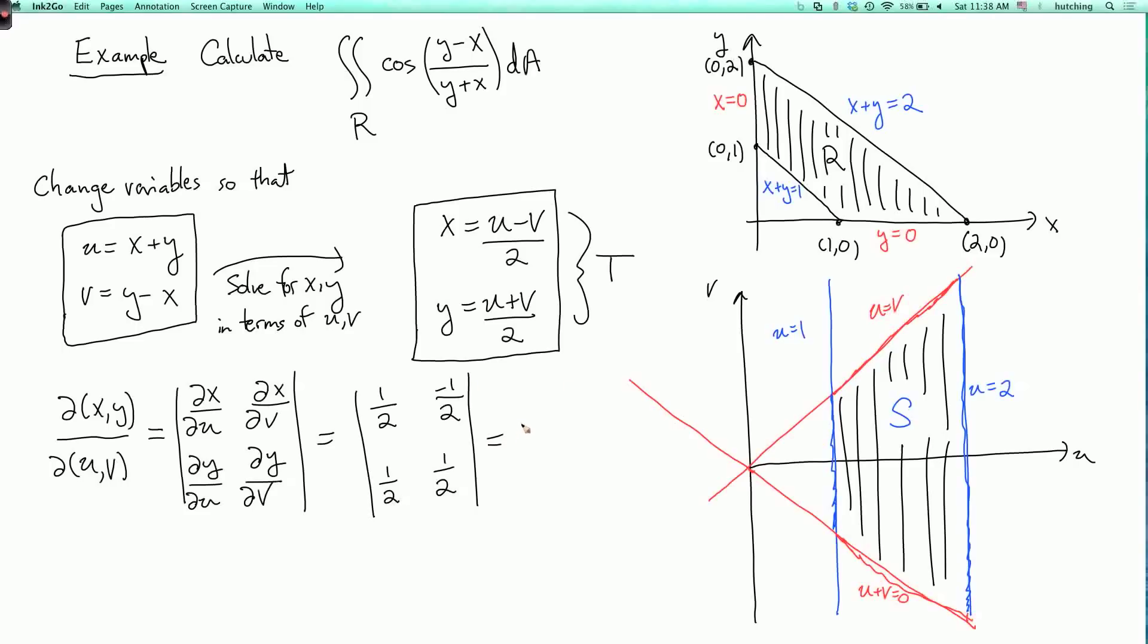And then I take the two diagonal entries minus the product of the other two entries. So I get a half times a half minus minus a half times a half. So that's a quarter plus a quarter, which is a half. And the magnification factor is the absolute value of this, which is also a half.